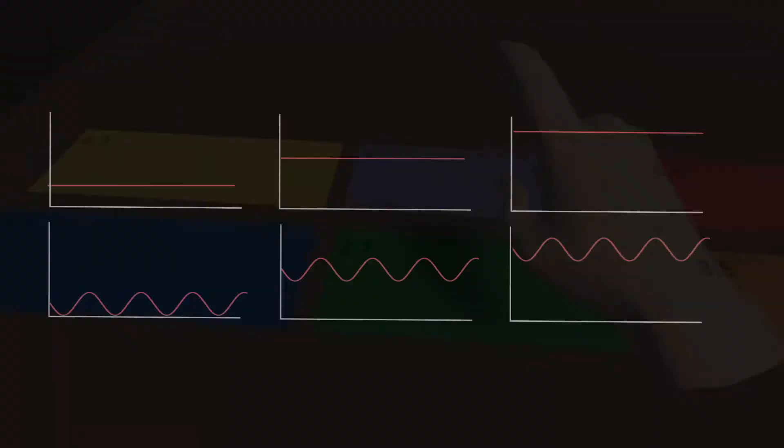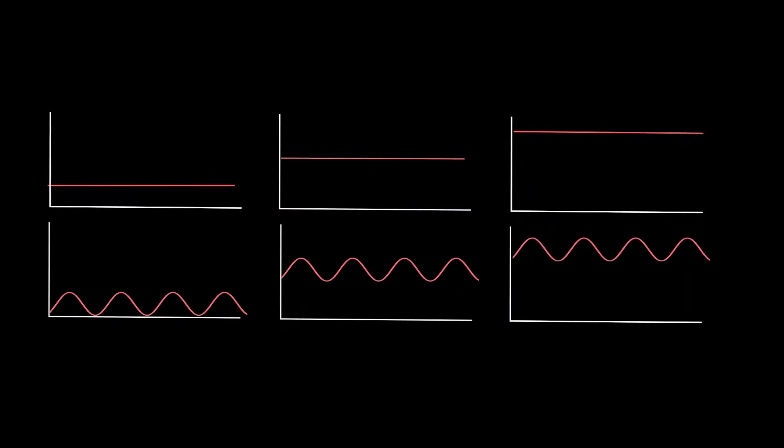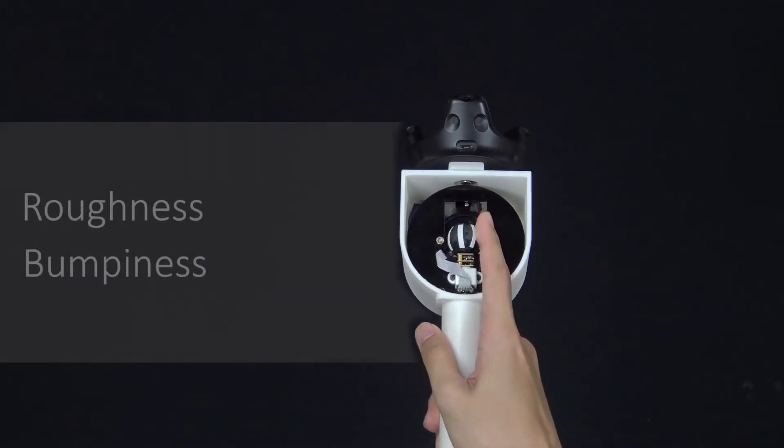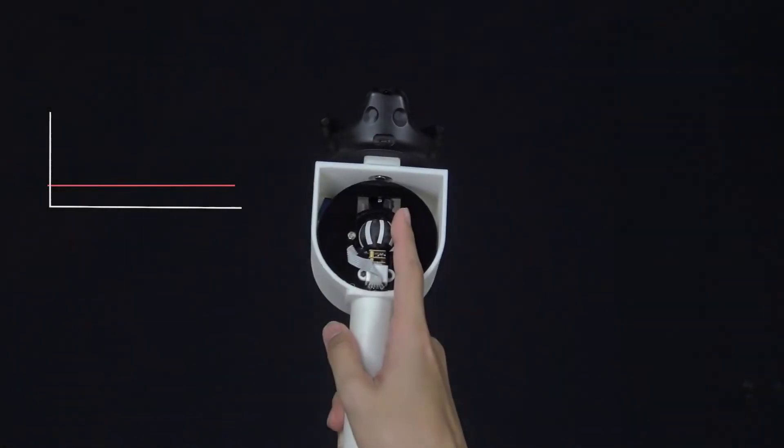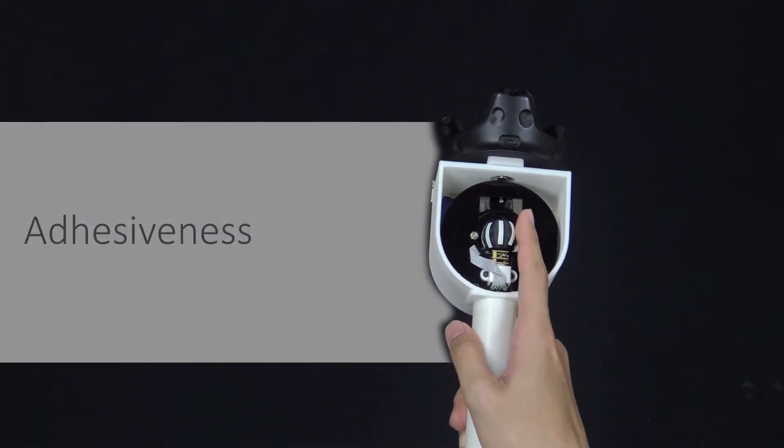For example, faster relative slip speed between the finger and the ball increases the sensation of roughness and bumpiness, while slower relative slip speed increases the sensation of adhesiveness.